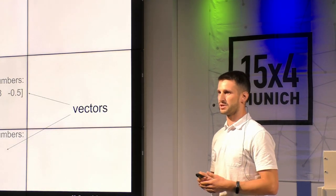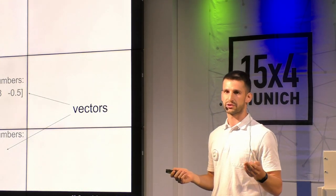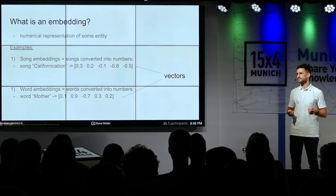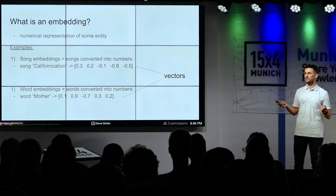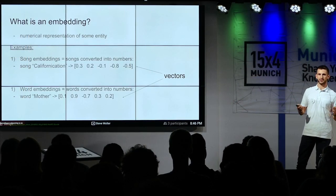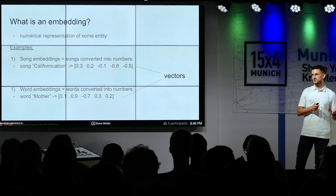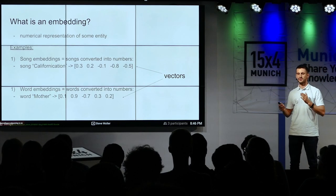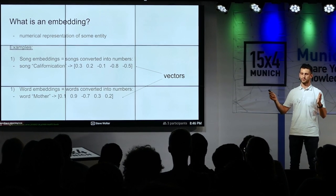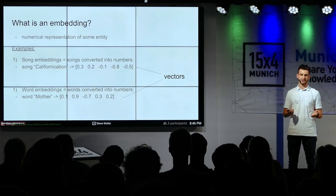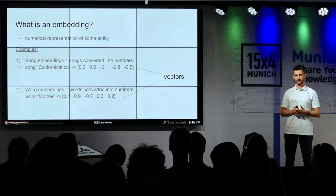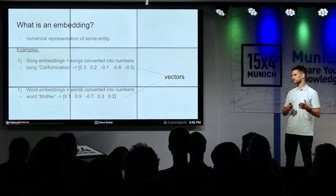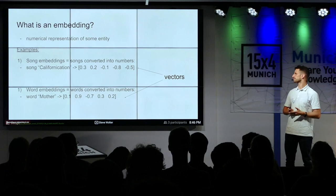So what is an embedding? Embedding is a numerical representation of some entity. Here are two examples: one is the song embedding — you have the song Californication and you're presented with a set of numbers, we call it a vector. Or you have the word 'mother' and you're presented with another set of numbers.